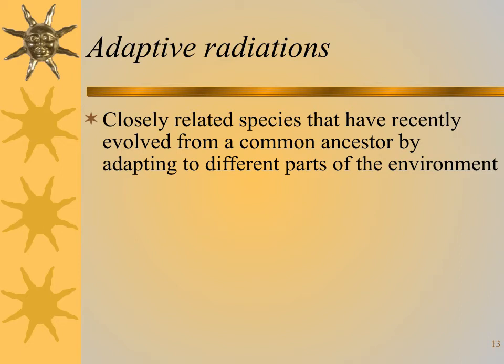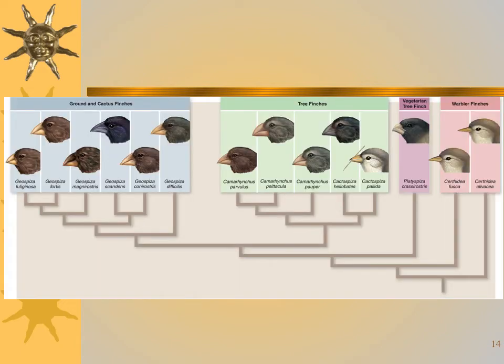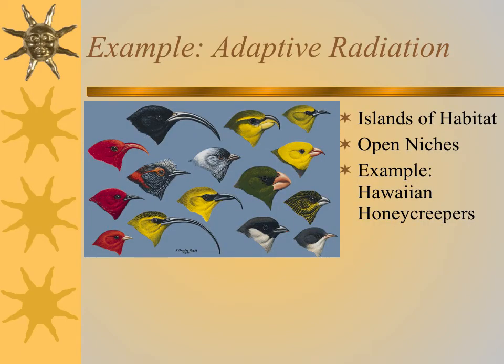Adaptive radiations are where closely related species have evolved from a common ancestor by adapting to new and different parts of the environment. We think these occur in environments where there are few other species and many resources — like when organisms reach isolated islands or after catastrophic extinction events. In the Galapagos, Darwin found all these different types of finches — ground finches, cactus finches, and warbler finches — all related to tree finches from the mainland but very different. Similarly, in Hawaii there's a radiation of all these honeycreepers, all somewhat similar but distinct. This occurs a lot when there are open habitats.